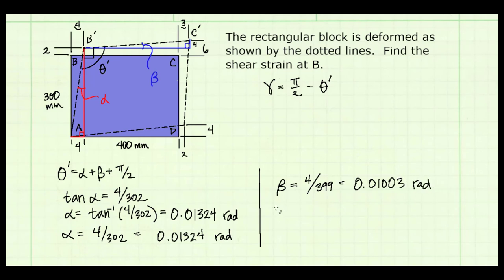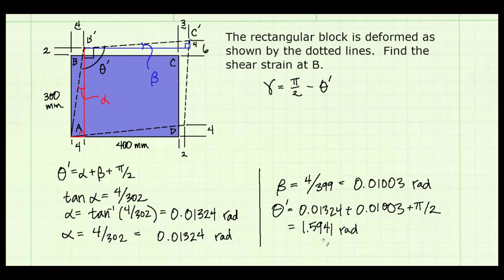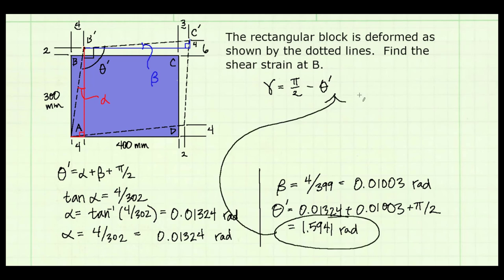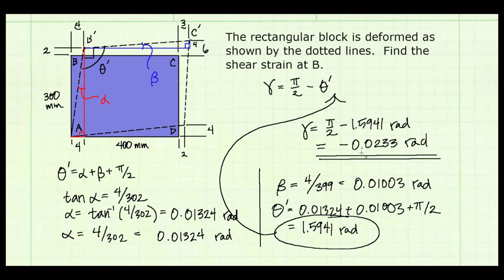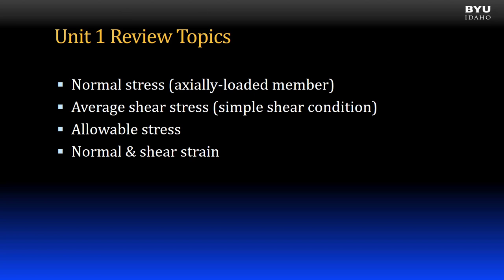Theta-prime equals alpha plus beta plus π/2, giving 1.5941 radians. Inserting into the shear strain equation, gamma = π/2 − 1.5941 = −0.0233 radians. The negative sign indicates the angle at B got larger after deformation, which is expected here. This concludes the review of Unit 1 topics.